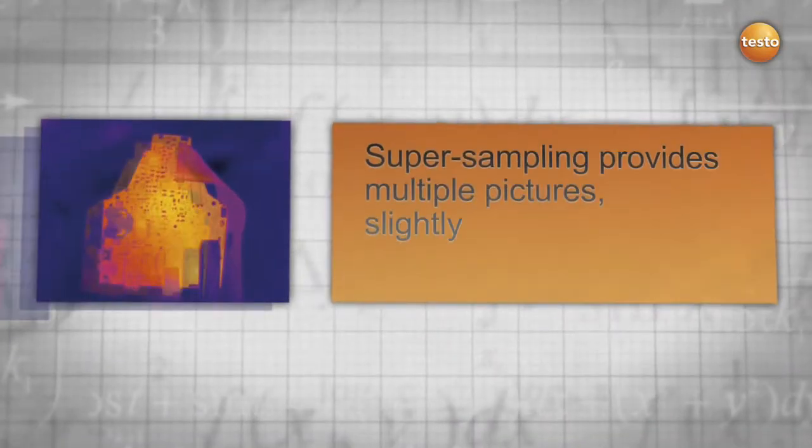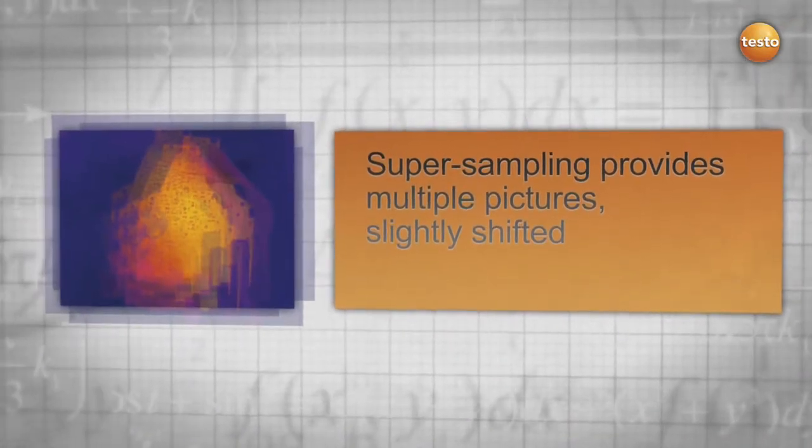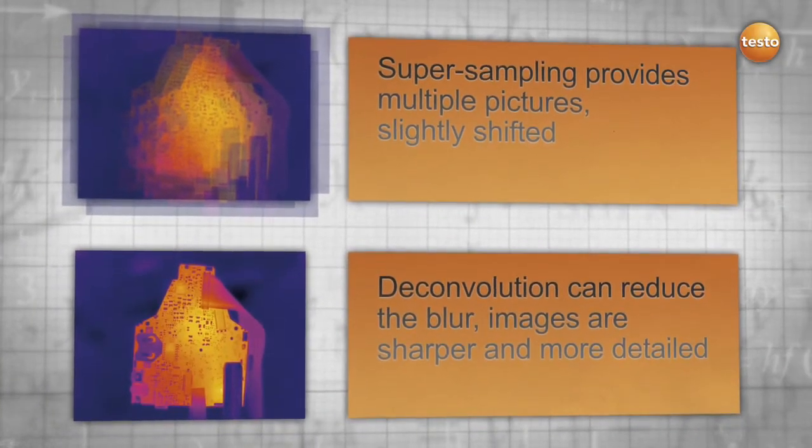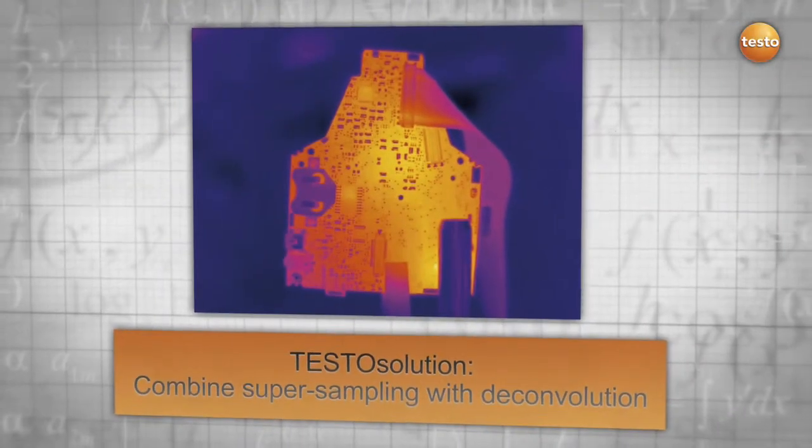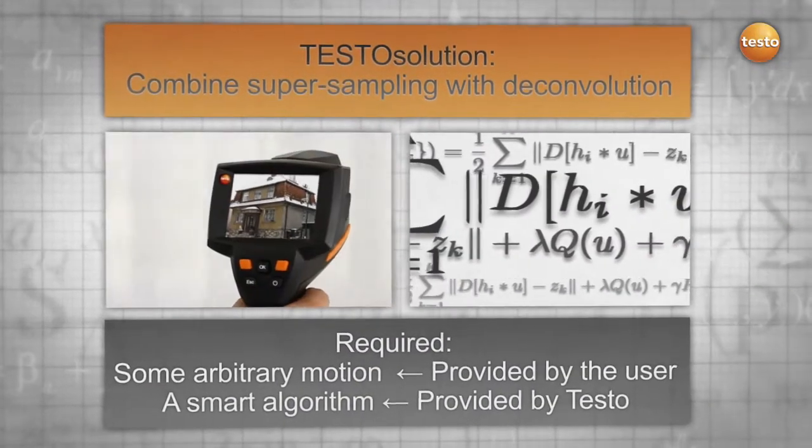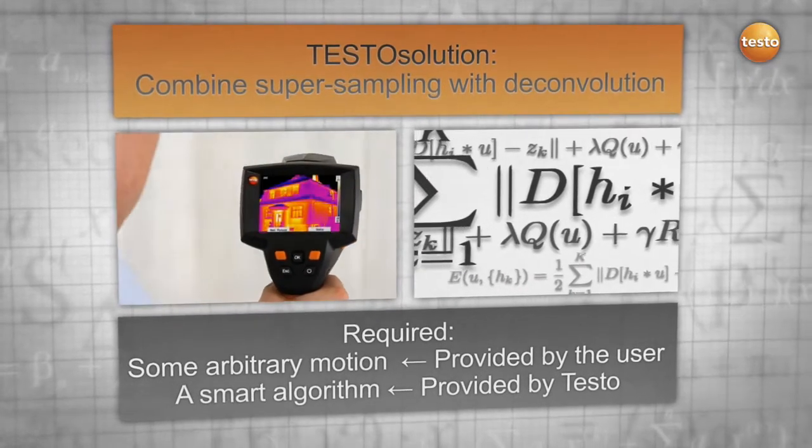The result: super sampling can take multiple images slightly shifted while deconvolution reduces the blurriness. The combination of both is a Testo solution. All we need is the natural movement of your hand and a smart algorithm provided by Testo.